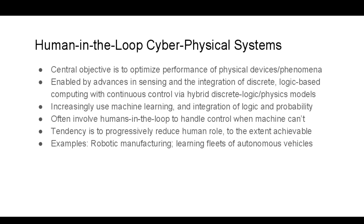The central objective of much of the work on human-in-the-loop cyber physical systems is to optimize the functionality and performance of physical devices, as opposed to complex human-intensive socio-technical systems. All of this work in CPS is enabled by advances in sensing and the integration of discrete computing through control theory and logic, leading to models such as hybrid automata. These systems increasingly use machine learning.